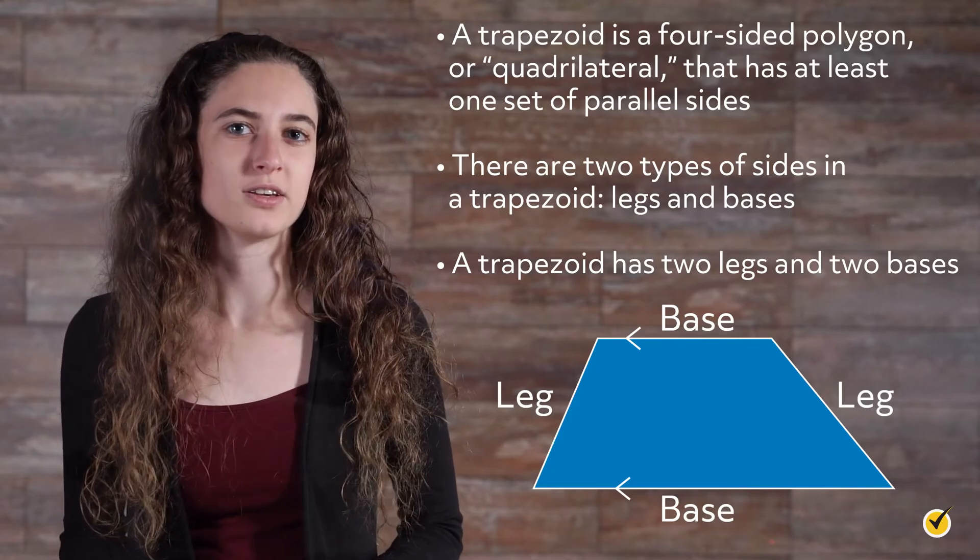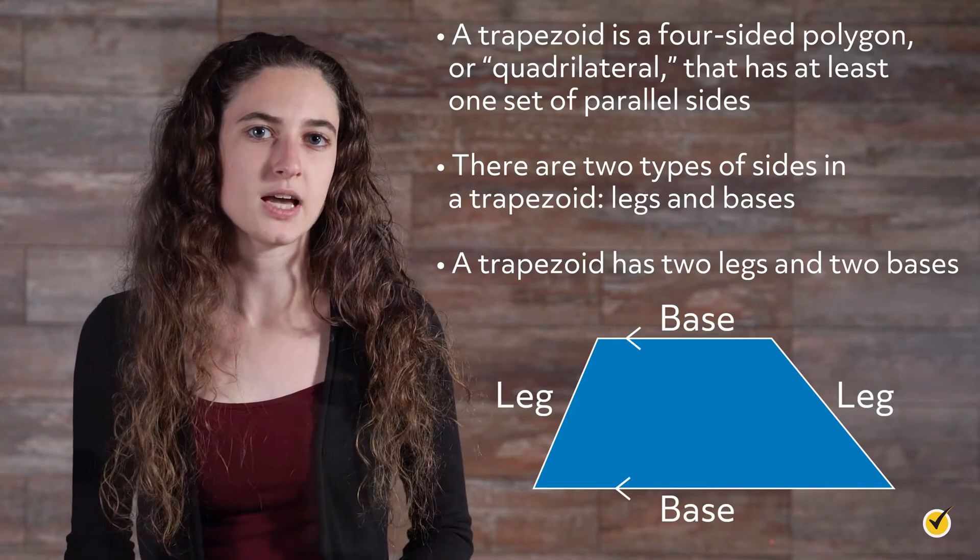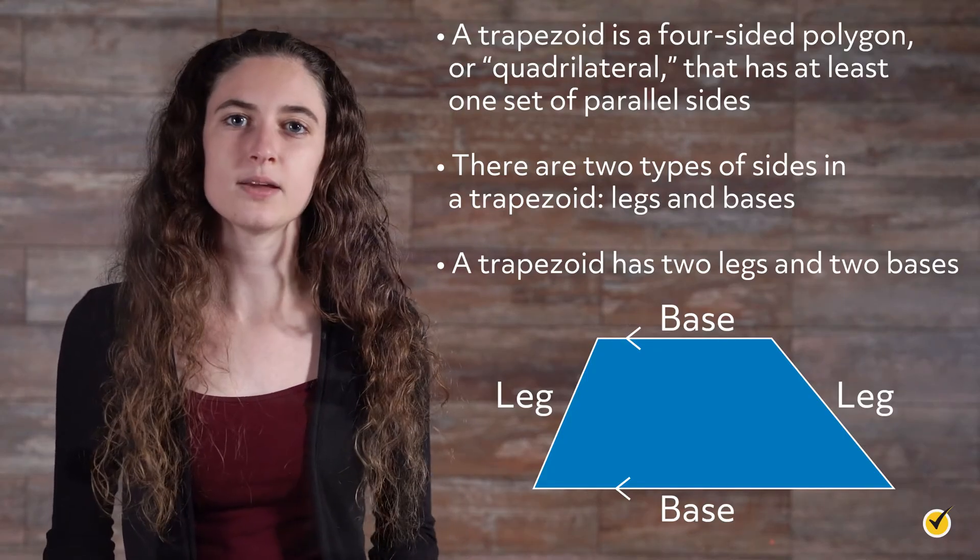A trapezoid is a four-sided polygon, or quadrilateral, that has at least one set of parallel sides. There are two types of sides in a trapezoid: legs and bases.